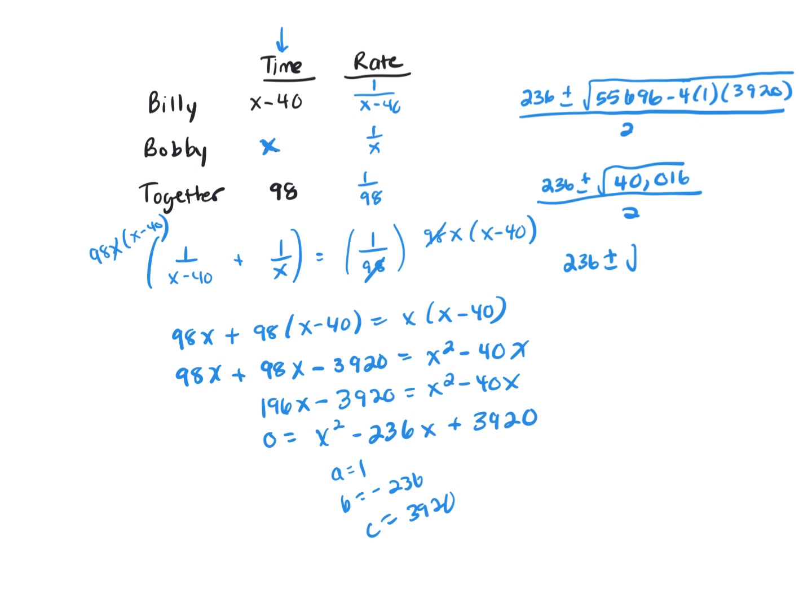And then 236 plus or minus, let's see if we can take the square root of that. The square root of 40,016 is not a perfect square. It's about 200, so I'll just put that, divided by 2.